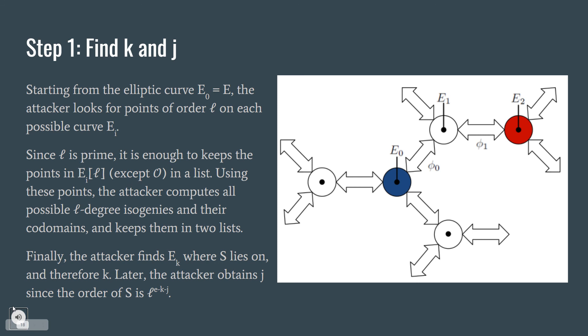Step 1, finding k and j. Starting from the elliptic curve E0, which is the starting elliptic curve, the attacker looks for points of order l on each possible curve Ei. Since l is prime, it's enough to keep the points in the elliptic curve Ei, except of course the identity point, in a list. Using these points, the attacker computes all possible l-degree isogenies and their codomains and keeps them in two lists. Finally, the attacker finds Ek where S lies on, and therefore k. Later, the attacker obtains j, since the order of S is l to the e minus k minus j.